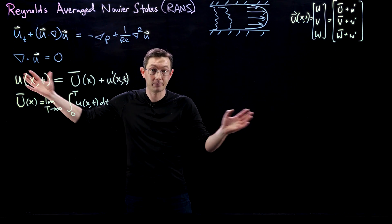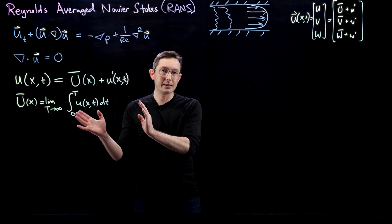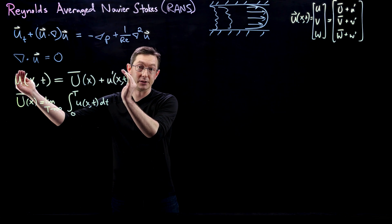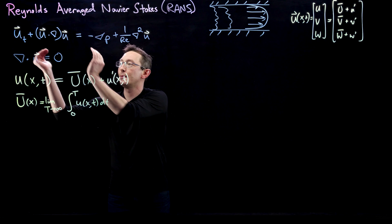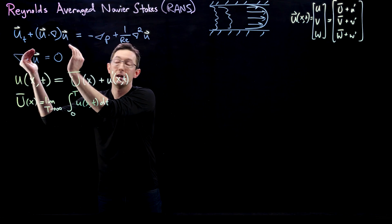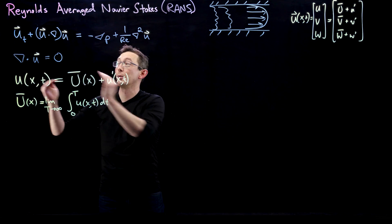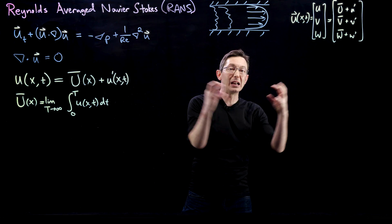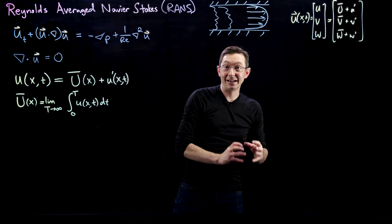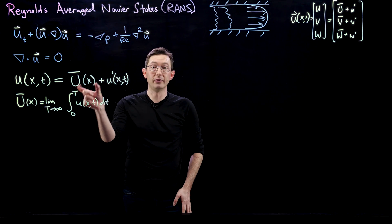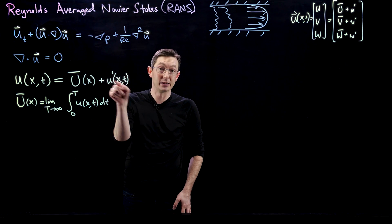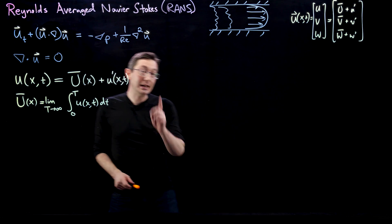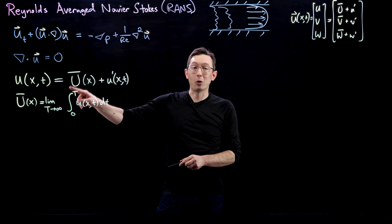It might be much simpler to model the mean flow and a few statistical moments — like the variance — than to model the full Navier-Stokes in all their complexity. So in this lecture and the next, we'll take the Reynolds decomposition, plug it into our divergence-free condition and momentum equation, and see what happens — whether we can get a simplified model just for the mean flow or for the turbulence fluctuations.